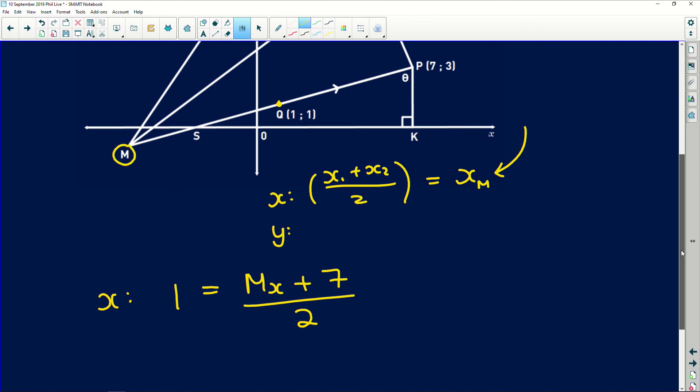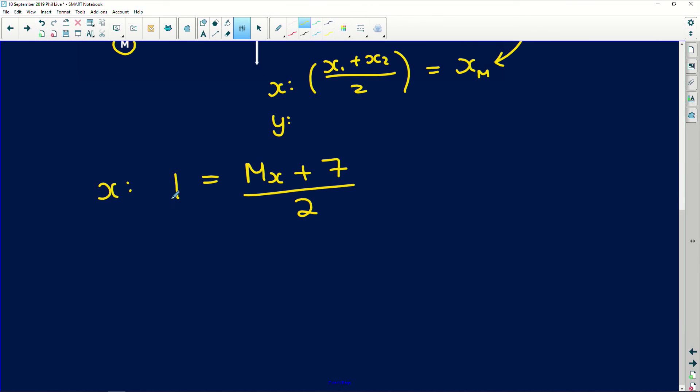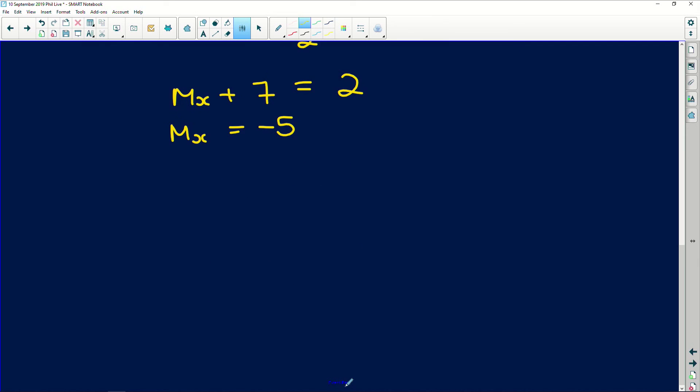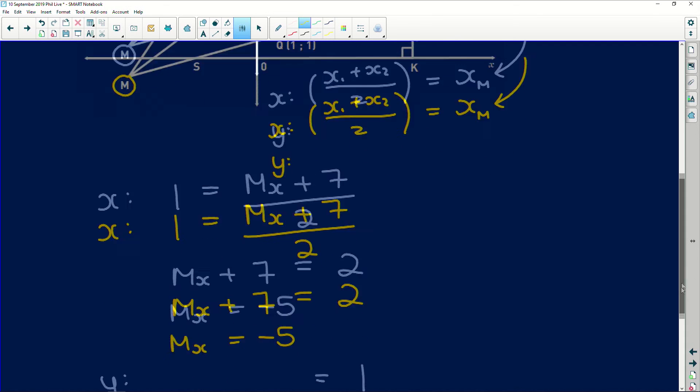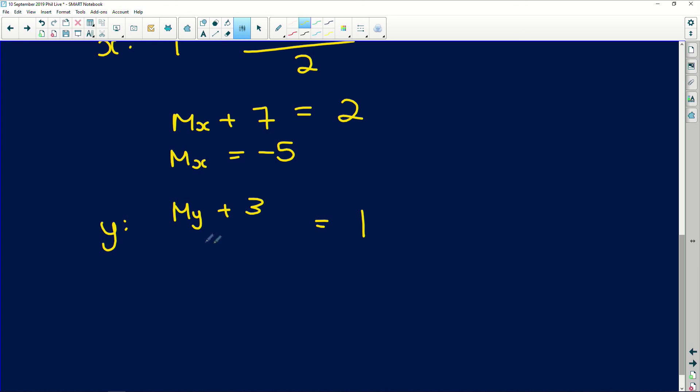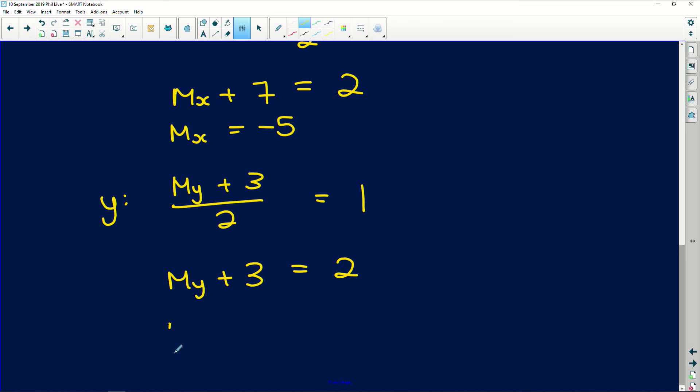We know that the midpoint value of X is 1. That means that if we add the X value of M to the X value of P, which is 7, and divide it by 2, we're going to get 1. That's how we find the X value at M. Multiply both sides by 2. We get M X plus 7 is equal to 2, which means that the X value at M is equal to 2 minus 7, which is negative 5. Do exactly the same thing for the Y value. We know that the midpoint value for the Y values is 1 because Q sits at 1, 1.